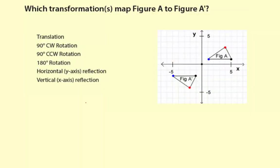Which transformations map figure A to figure A prime? I'm going to look at the orientation of the points here. Just from a first glance, it could be a rotation or maybe a reflection.